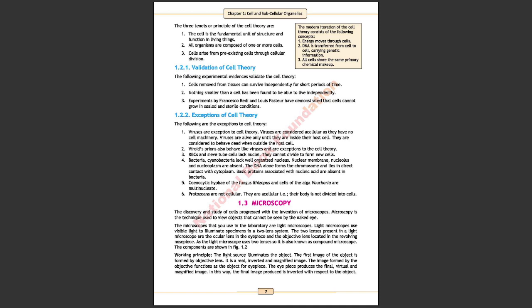The light microscope is also known as compound microscope. The components are shown in figure 1.2. Working principle: The light source illuminates the object. The first image of object is formed by objective lens. It is a real, inverted and magnified image. The image formed by objective functions as the object for eyepiece. The eyepiece produces the final, virtual and magnified image. In this way the final image produced is inverted with respect to the object.